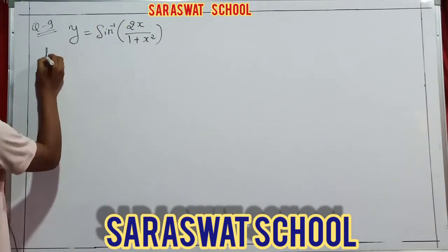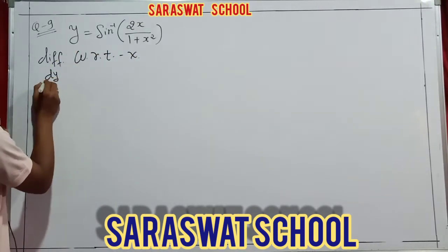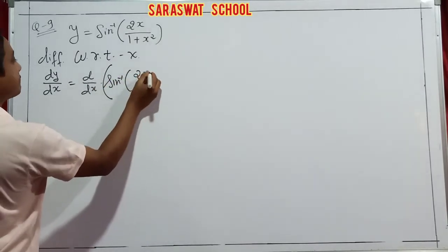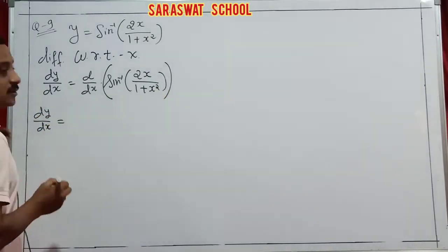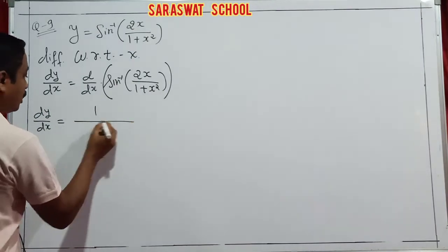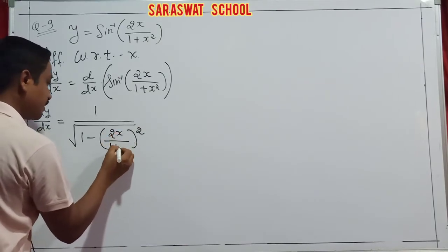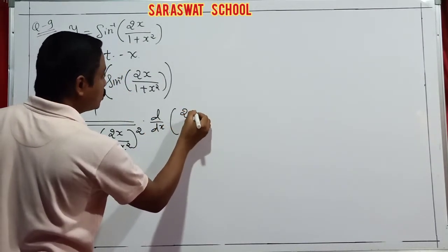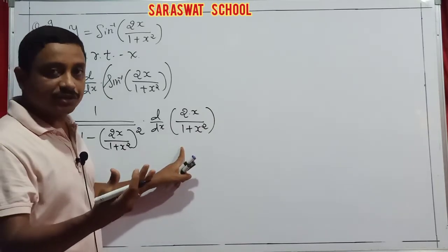So here, since no condition is given, I start with direct differentiation with respect to x. So dy/dx = d/dx of sin⁻¹(2x/(1+x²)). I hope you know the formula: the derivative of sin⁻¹x is 1/√(1-x²). Here the whole expression 2x/(1+x²) is the x, so we apply the formula and d/dx of (2x/(1+x²)) as it is. Now apply the division rule, u/v rule, and LCM.